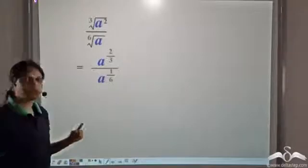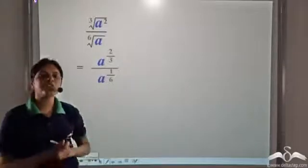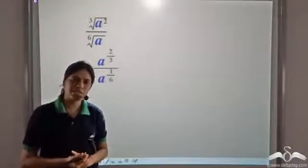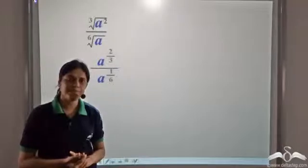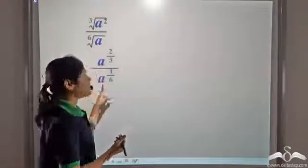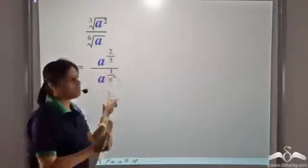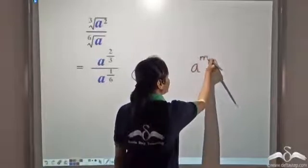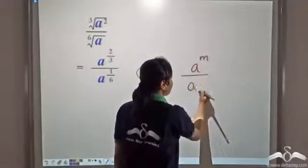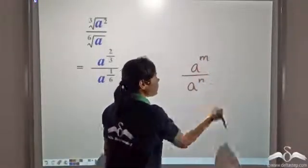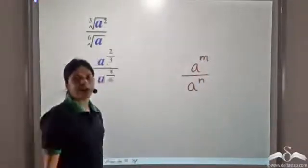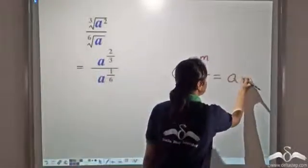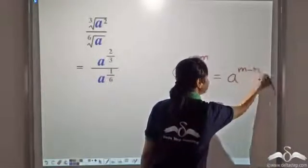We also know that the laws of exponents hold for fractional exponents as well. Now when the base is the same — that is when we have a to the power m divided by a to the power n — we can write it as a to the power m minus n.